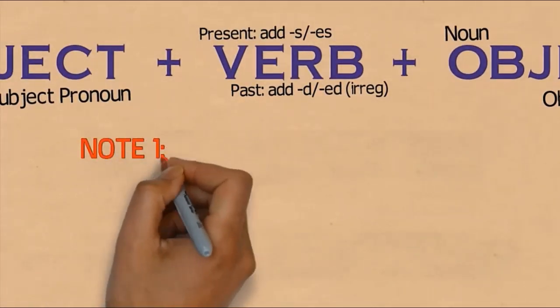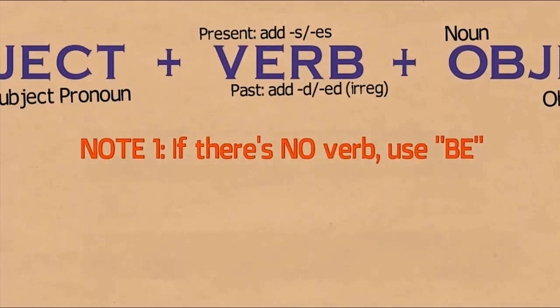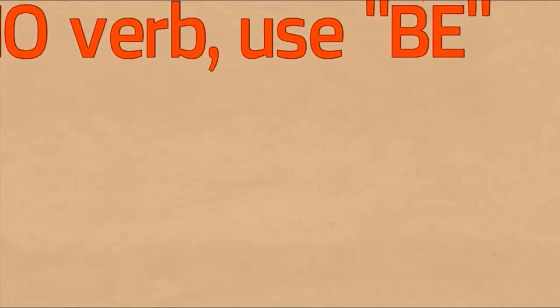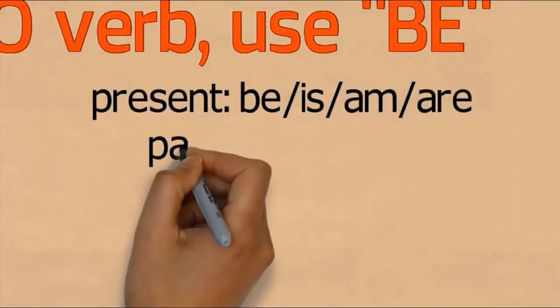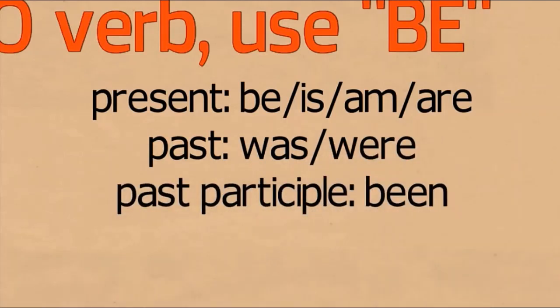There are some notes. First, if there is no main verb, no base form of the verb, you must use 'be'. In present tense, 'be' can be be itself, or is, am, or are. For example: 'I am pretty', 'You are beautiful' - there's no main verb, so you must use this be form. In past tense, use was or were. For past participle in perfect tense or passive form, use been.